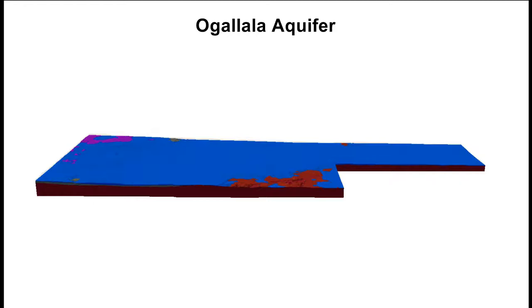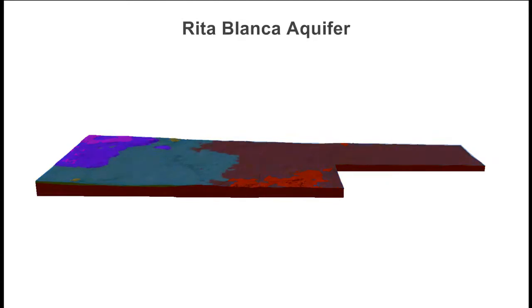The Ogallala Aquifer consists mostly of coarse-grained sands and gravels, but also includes shales, clays, and other finer materials. Below the Ogallala Aquifer, we can see the Rita Blanca Aquifer, shown in purple, on the west or left side of the district in parts of Dallam and Hartley counties. This aquifer has much less capacity than the Ogallala Aquifer for storing groundwater.